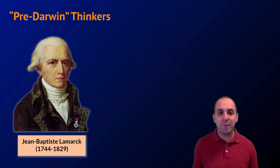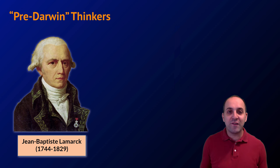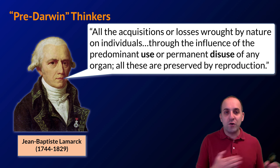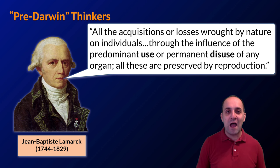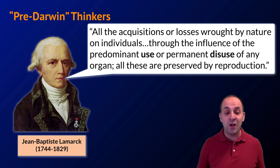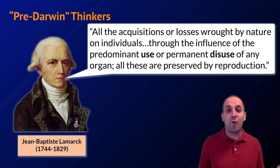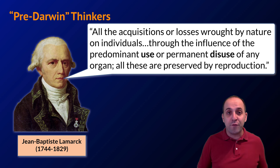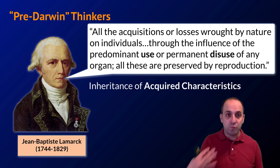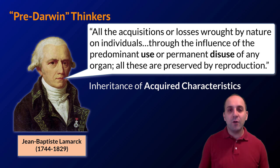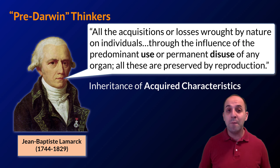The last pre-Darwinian thinker we're going to spotlight is Jean-Baptiste Lamarck, who actually put forth some thoughts about how living things evolved before Darwin did. Lamarck's evolution was a notion of use or disuse — the idea that as individuals live their lives and use certain aspects of their anatomy, behavior, or physiology, those things would be strengthened and passed on in enhanced forms to the next generation. Structures and behaviors that individuals did not use would atrophy and be passed on in weakened forms. This notion is referred to as the inheritance of acquired characteristics, and it is not how evolution actually works.